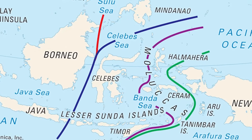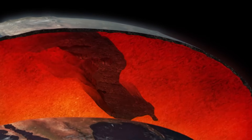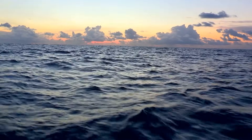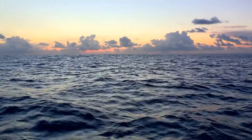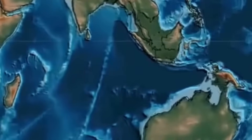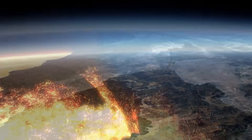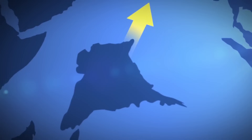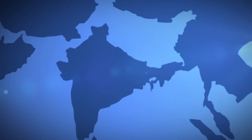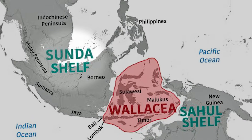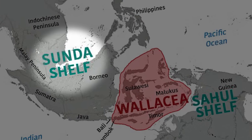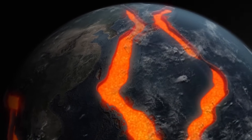Now let's dive into the science of why the Wallace Line exists. The key factor lies in geological history — specifically the shifting of Earth's tectonic plates and the rising and falling of sea levels over millions of years. Tectonic plates are huge sections of the Earth's crust that float on the semi-fluid mantle beneath, moving over geological timescales by colliding, pulling apart, or sliding past each other. Around 50 million years ago, the landmasses that would eventually become Southeast Asia and Australia were part of a much larger landmass, often referred to as the Sunda Shelf. As the Earth's tectonic plates shifted, this landmass broke apart.